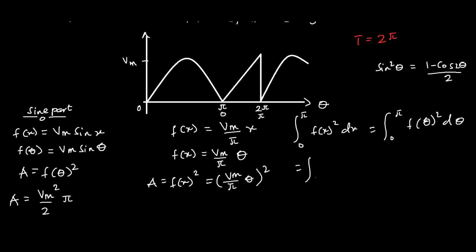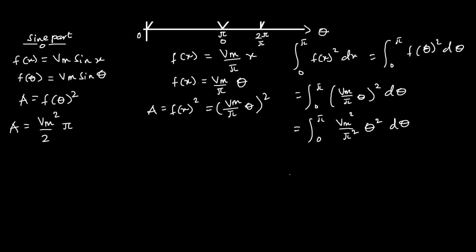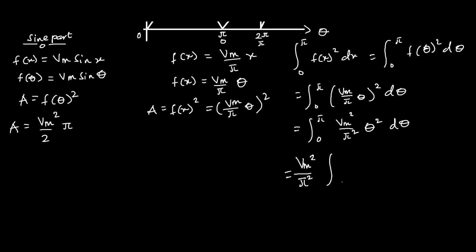This is equal to the integral from 0 to π of (Vm/π · θ)² dθ, which gives us the integral from 0 to π of (Vm²/π²)·θ² dθ. Bringing the constant outside the integral, we have (Vm²/π²) times the integral from 0 to π of θ² dθ.